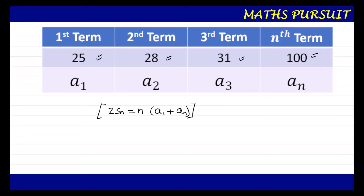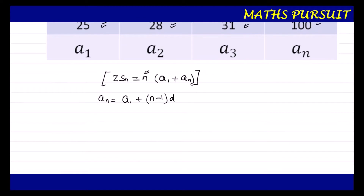If we look at the formula, we know everything except n. So let us find the value of n. To do that, we will use the nth term formula: an = a1 + (n − 1) × d. First, we need to find d, the common difference. The common difference d equals a2 minus a1.